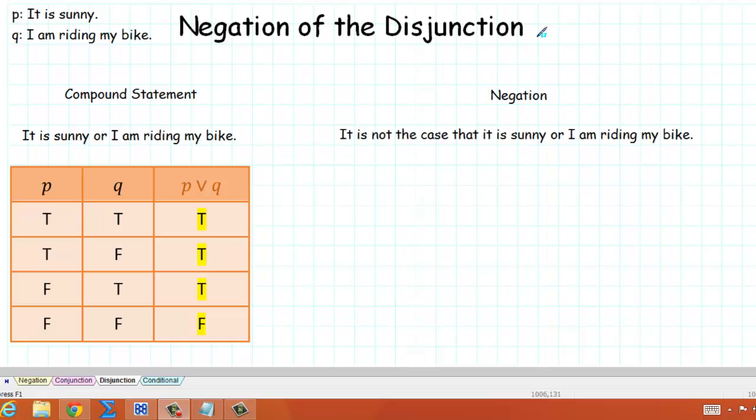Welcome. In this video, we're going to discuss the negation of the disjunction. Let's say we have the simple statements P: it is sunny, and Q: I am riding my bike.